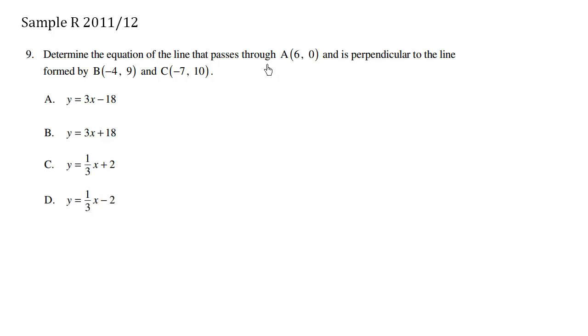Determine the equation of the line that passes through point A and is perpendicular to the line formed by these other two points. Now when we're finding the equation of the line, there's one formula that comes in really handy: y minus y1 equals m times x minus x1. This is the slope-point form of the line equation.